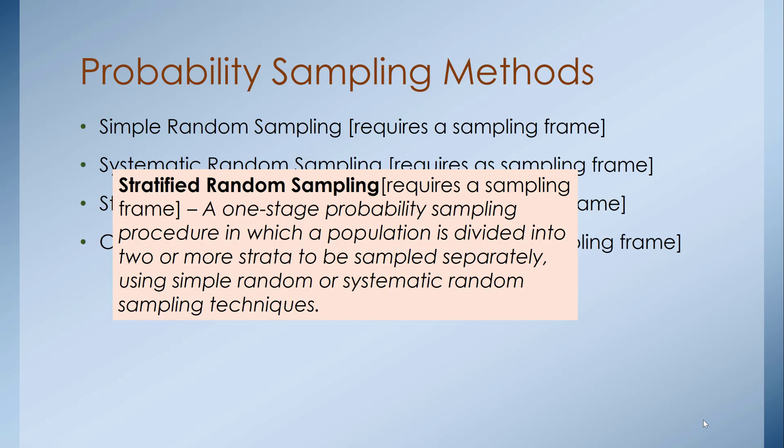Stratified random sampling is a one-stage probability procedure in which the population is divided into two or more strata to be sampled separately, using simple or systematic random sampling techniques. This is used in census data collection for large geographic regions — for example, dividing a state into north, south, east, and west strata. It's a way to break down a very large population and still obtain the random sample needed.